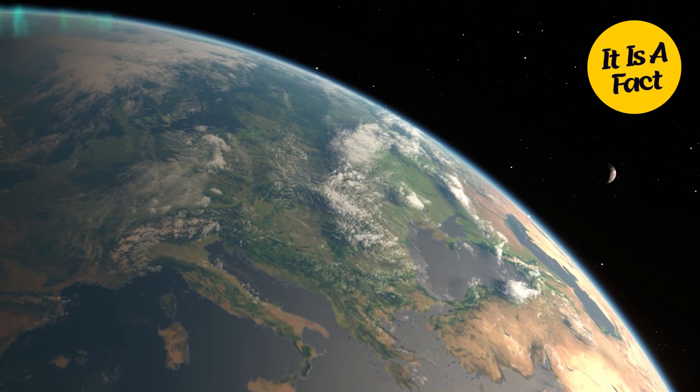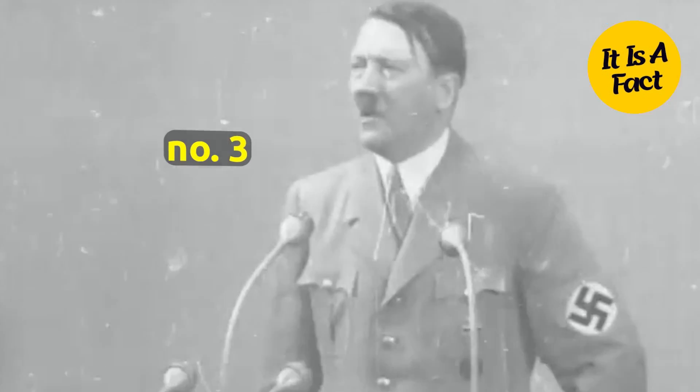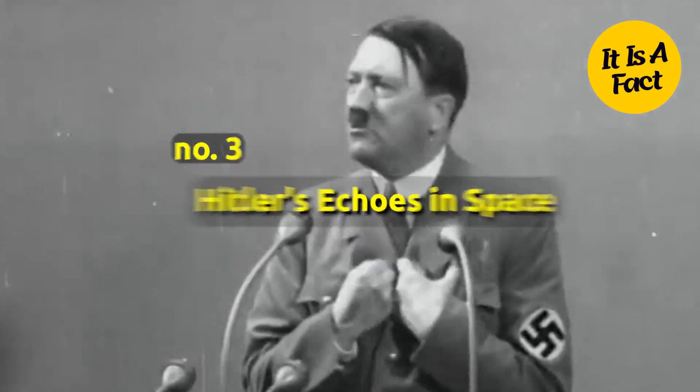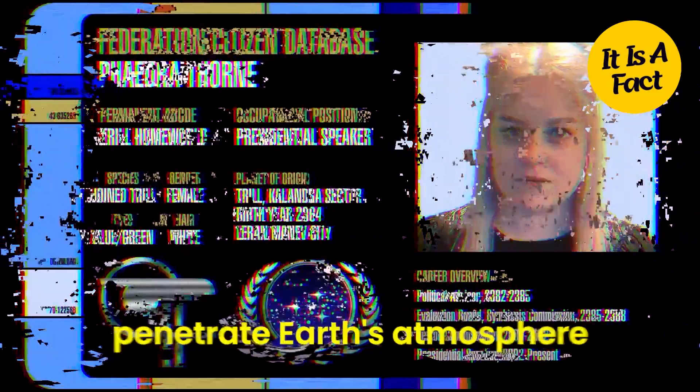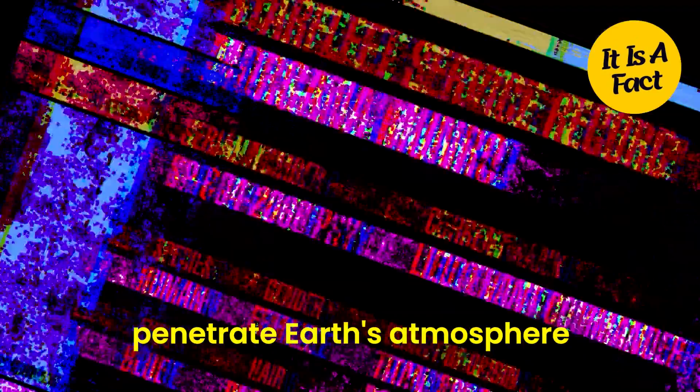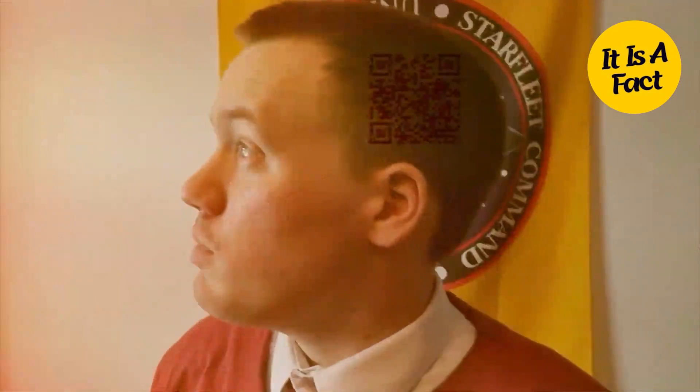Delve into an astonishing revelation with theory number 3, Hitler's Echoes in Space. Did you know that the first strong signal to penetrate Earth's atmosphere was Hitler's opening speech at the 1936 Olympics?